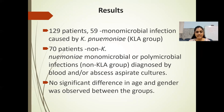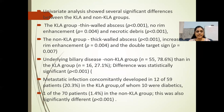No significant difference in age or gender was observed between the two groups. Univariate analysis showed significant differences: the KLA group had thin-walled abscesses, no rim enhancement, and necrotic debris. The non-KLA group had thick-walled abscesses, increased rim enhancement, and double target sign. Underlying biliary disease was more common in the non-KLA group than the KLA group, a statistically significant difference.